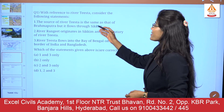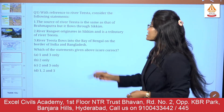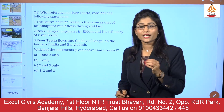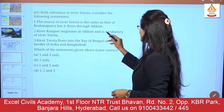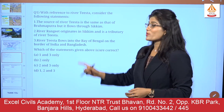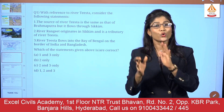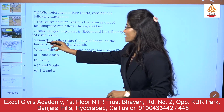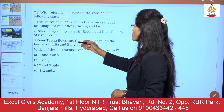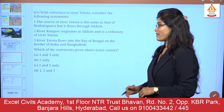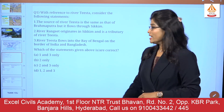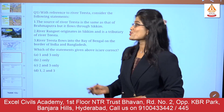Second question: river Rangit originates in Sikkim and is a tributary of river Tista. To get the answer to this question, you have to keenly go through these slides again. Third statement: river Tista flows into the Bay of Bengal on the border of India and Bangladesh. Which of the statements given above are correct? There are four options given — please choose the correct option.